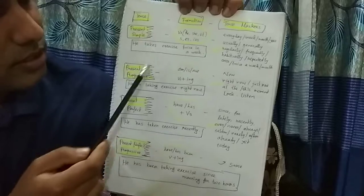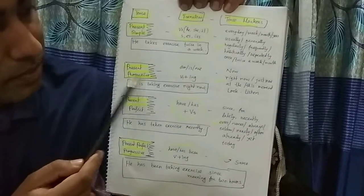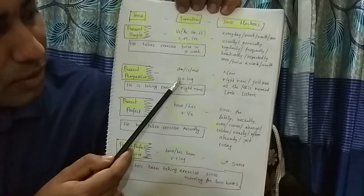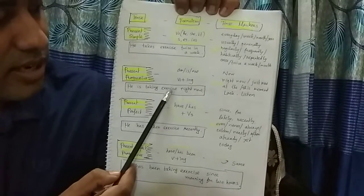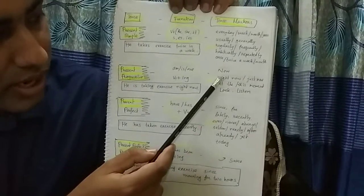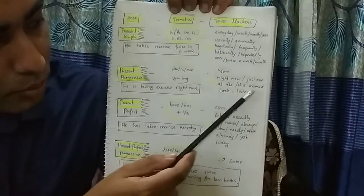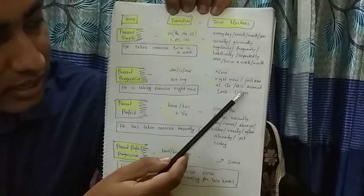Then coming to present progressive: am, is, are plus verb one plus ing. Look at the example: he is taking exercise right now. Markers: now, right now, just now, at the moment, at this moment. Look and listen - these two verbs will always take ing.